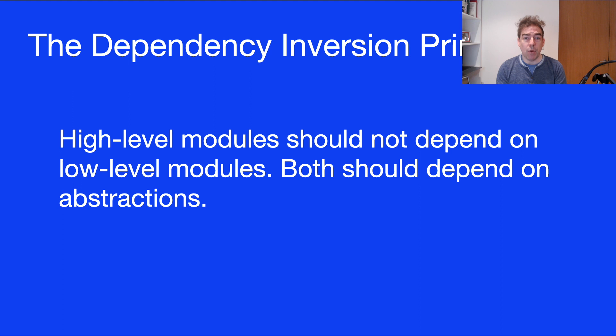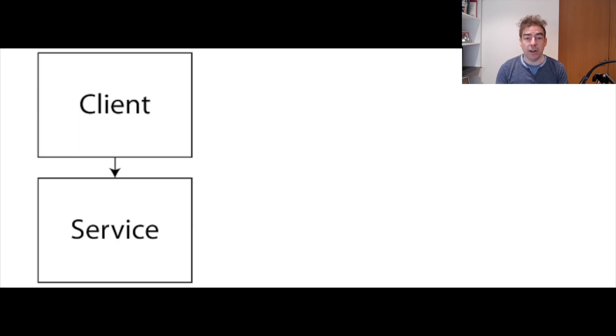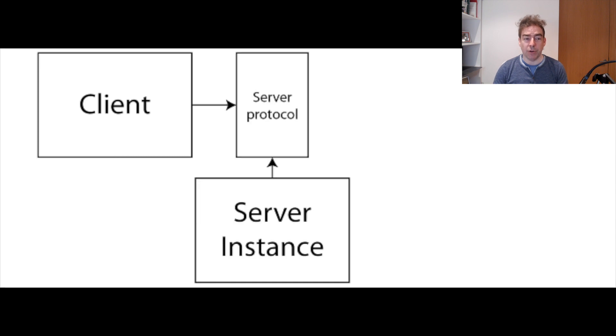So if we look at one case where we've got a client dependent on a service, unfortunately they're tightly coupled together. So any changes to the service more than likely will end up with changes to the client. So what can we look at to try and solve this problem?